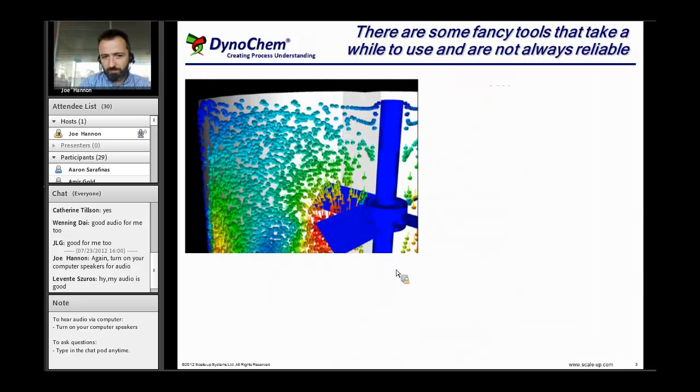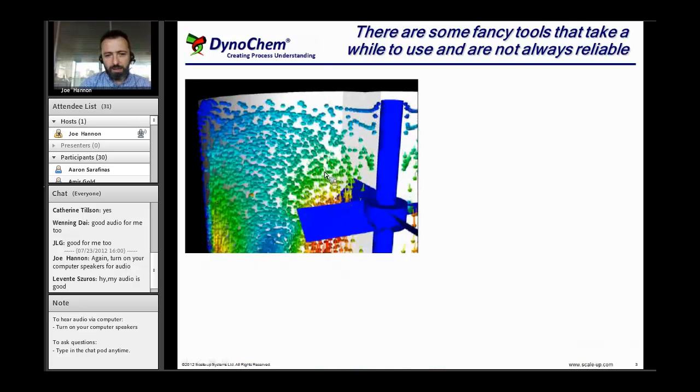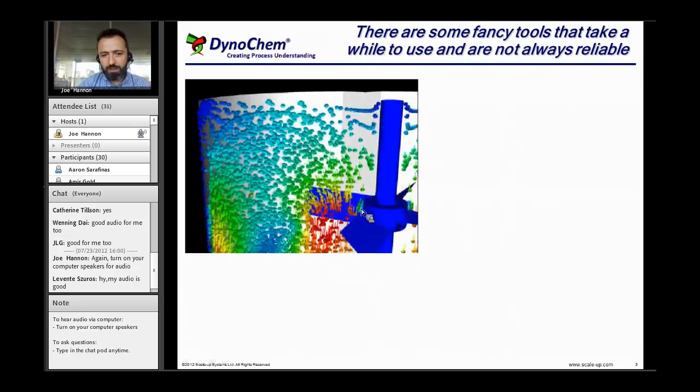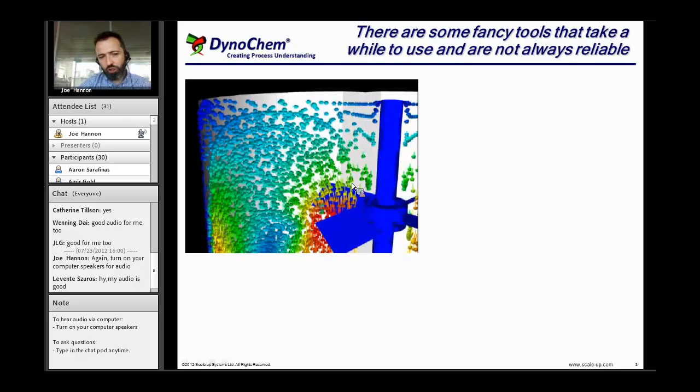There are some fancy tools out there which usually take a real power user, a dedicated user to apply. One of them is called computational fluid dynamics. That's an area where I actually did my own PhD and our company started in that field. This involves dividing the reactor into a large number, like maybe a million subdivisions, and then looking at the three-dimensional transport of mass, heat and momentum equations in that mesh of cells. This has the potential to give you a very detailed description of what's happening inside the reactor.